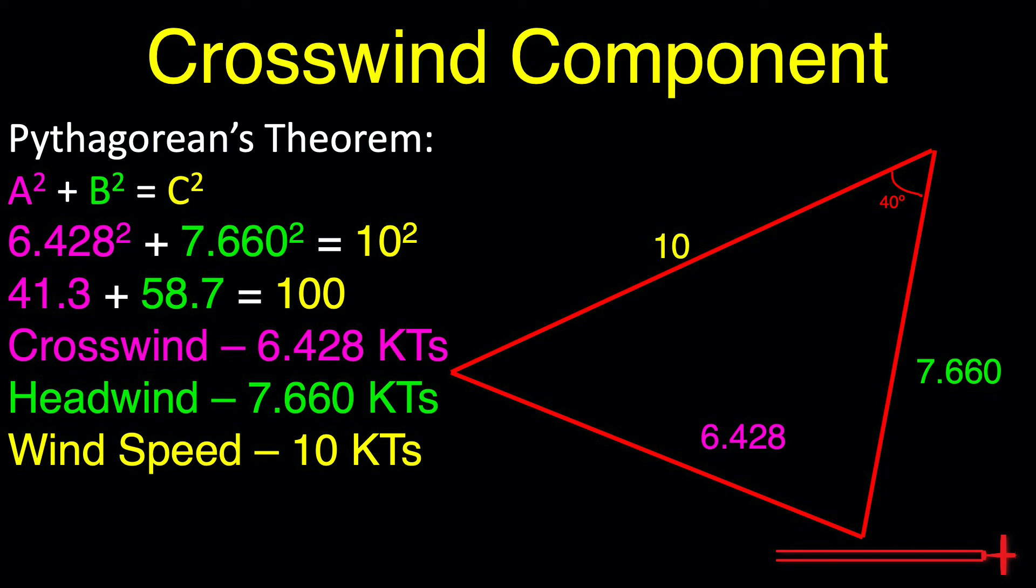Try it out for yourself. Calculate the winds near you using sine and cosine, and afterwards, use Pythagorean's theorem to prove the values are correct. You can even compare it to the paper chart if you're still skeptical. 100% of the time, it works. Every time.